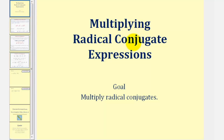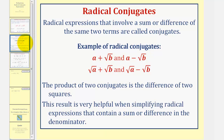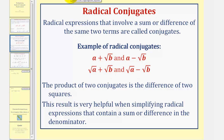Welcome to a lesson on multiplying radical conjugate expressions. Radical expressions that involve a sum or difference of the same two terms are called conjugates. Here are some examples: A plus square root B and A minus square root B are radical conjugates, as well as square root A plus square root B and square root A minus square root B. Notice how the terms are the same, but one is a sum and the other is a difference.